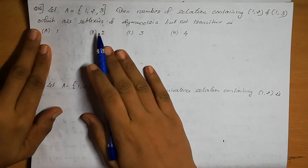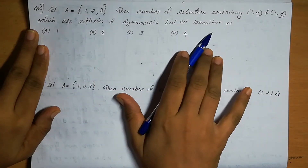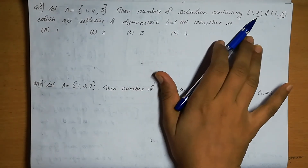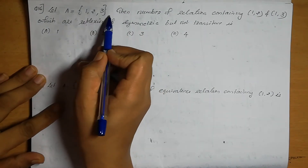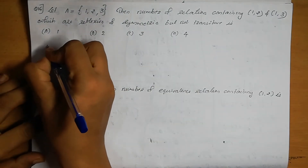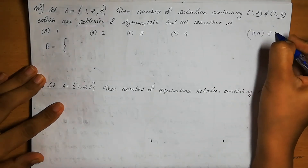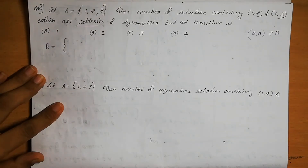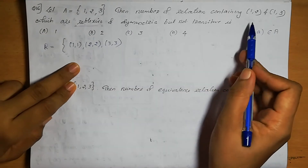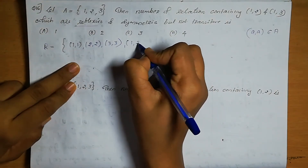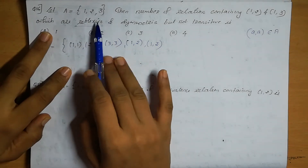Question number 16. Let A equals {1, 2, 3}. Find the number of relations containing (1,2) and (1,3) which are reflexive and symmetric but not transitive. For reflexive, we must include (1,1), (2,2), (3,3). The relation also contains (1,2) and (1,3) as given. For symmetric, we must include (2,1) for (1,2), and (3,1) for (1,3).